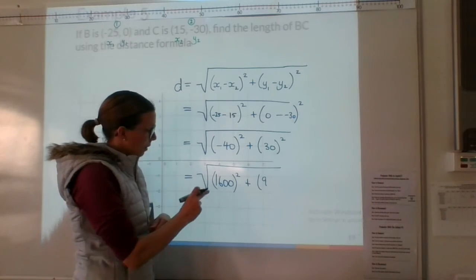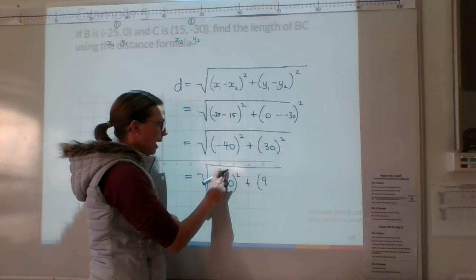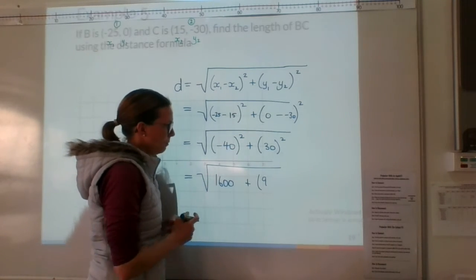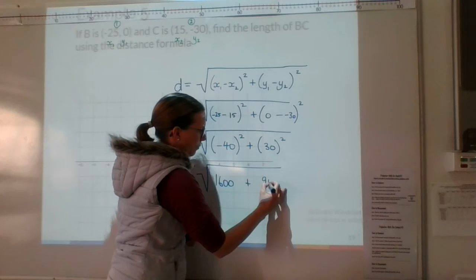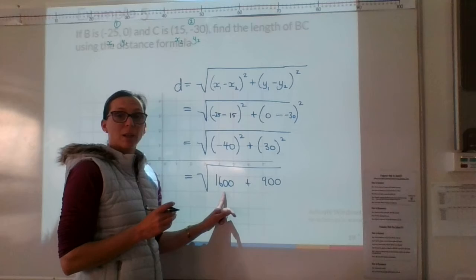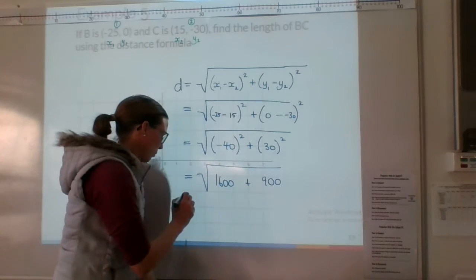Oops. My mistake. Here, I have already squared it, so I don't need to write the square a second time. So negative 40 squared is 1600. 30 squared is 900.